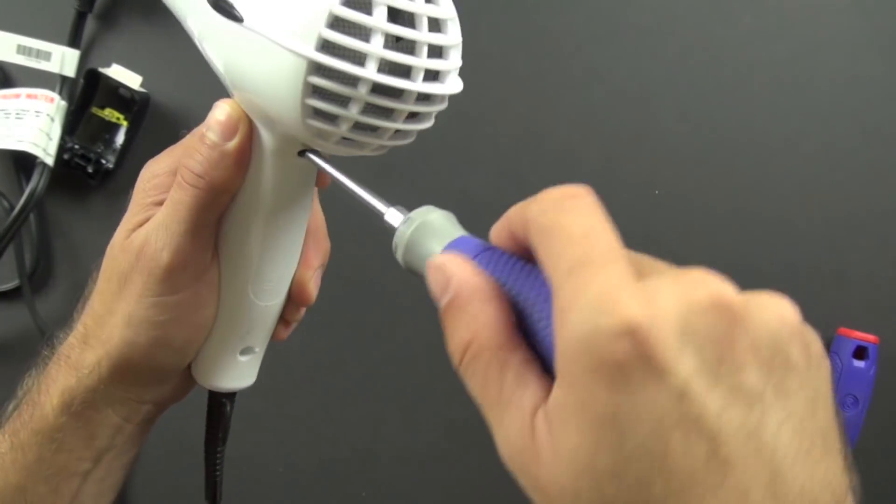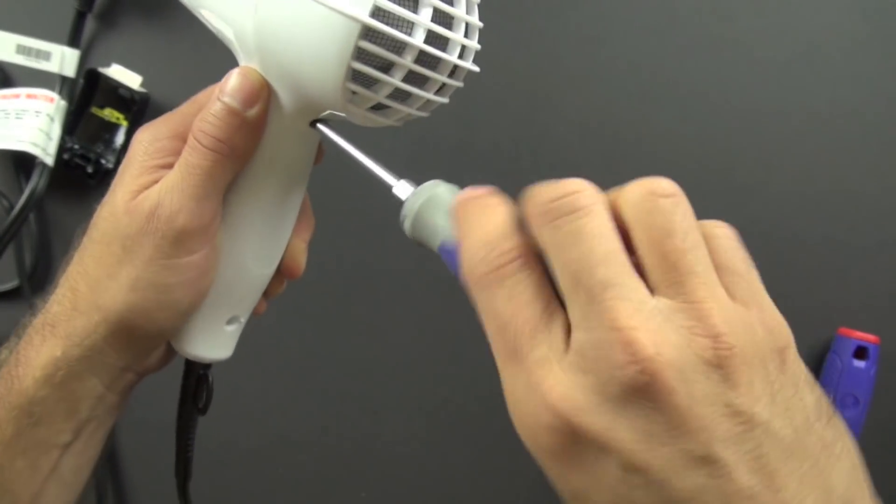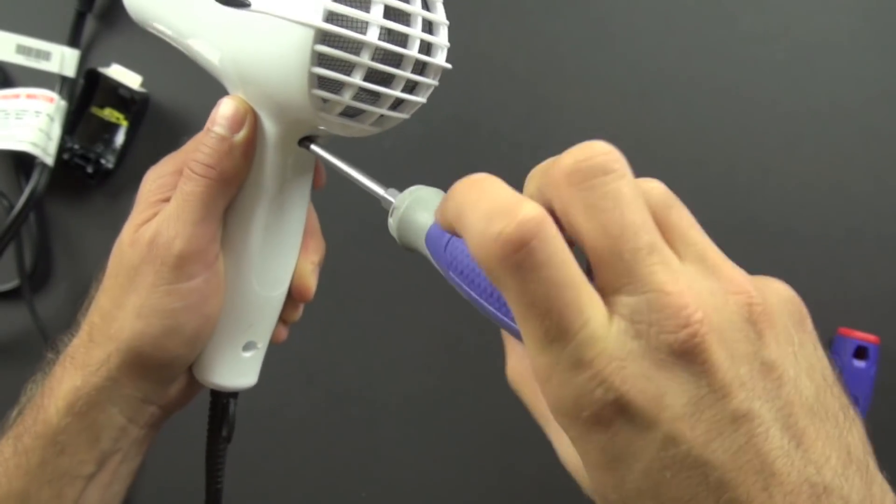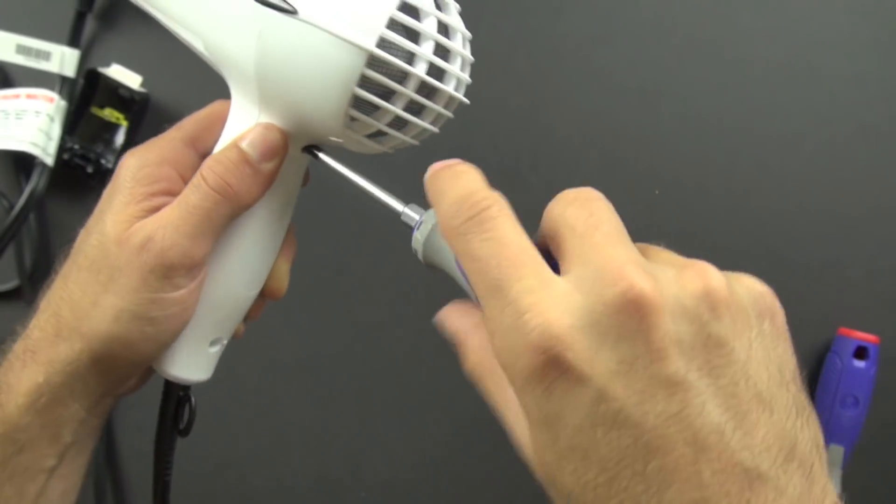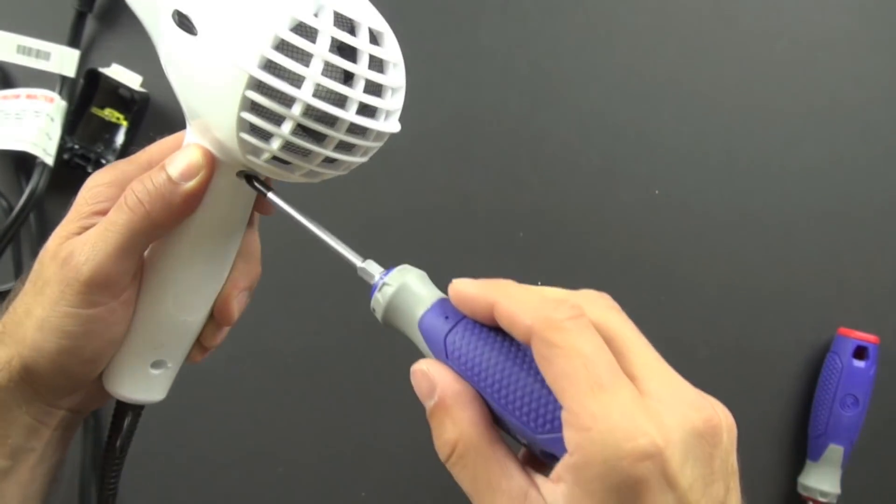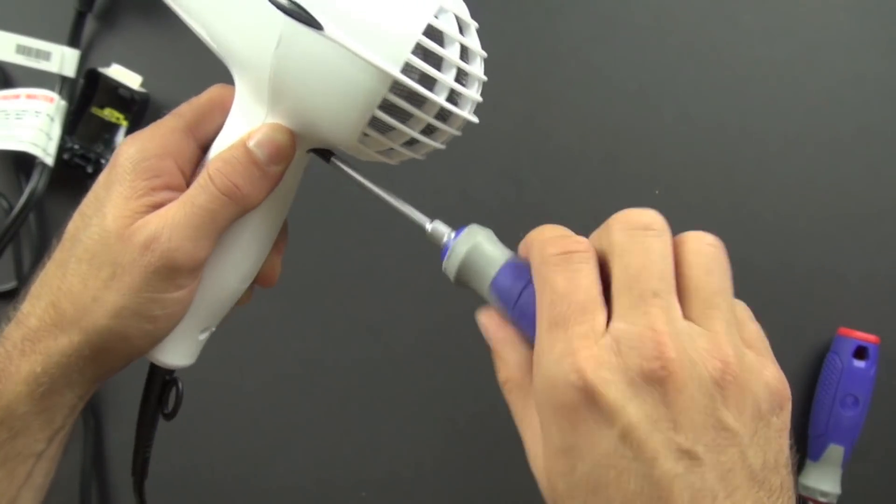The reason they would do that is that hairdryers are often used in very moist environments like bathrooms and things like that. The screws, if they're made out of steel, are going to rust, and so you want to put a coating on them that won't rust. Chrome won't rust, so that protects them.